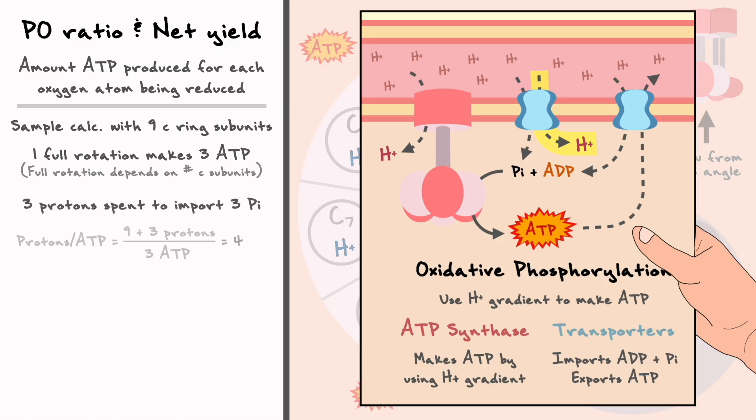With those values, we can now compute the proton per ATP ratio, which for a ring of 9 C subunits is 4. So in other words, it takes 4 protons to make 1 ATP molecule.